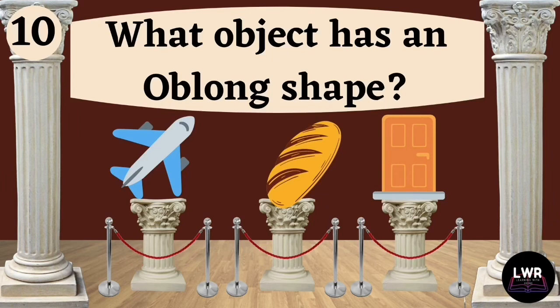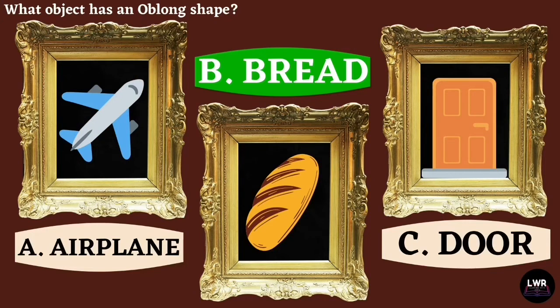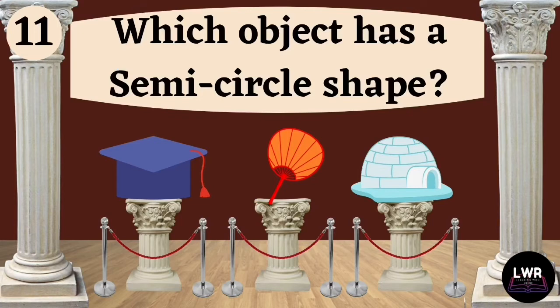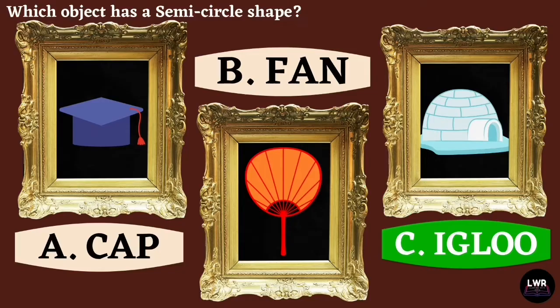Question number ten: what object has an oblong shape? The correct answer is letter B, bread. Question number eleven: which object has a semicircle shape? The correct answer is letter C, igloo.